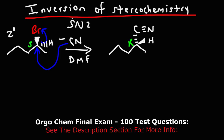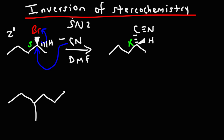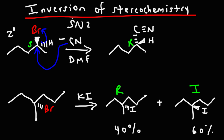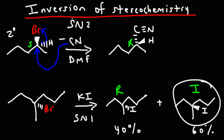Inversion of stereochemistry is typically associated with SN2 reactions. It can occur with SN1 reactions as well, but SN1 reactions will give us an unequal racemic mixture. For example, if we react a secondary alkyl bromide with potassium iodide, we're going to get two products: the retention product and the inverted product. We typically get more of the inverted product — it could be 40-60 or 30-70 — because of the intimate ion pair. But SN1 reactions will give us the inverted product as well, so you want to keep that in mind.